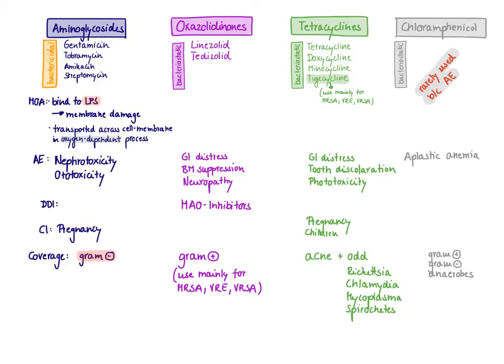It's important to remember that the oxazolidinones are MAO inhibitors, so you always need to watch out for drug-drug interactions with other drugs like SSRIs or MAOIs, and you should be worried about serotonin syndrome. The oxazolidinones only affect gram-positive bacteria because gram-negative bacteria have an efflux pump for which the oxazolidinones are substrates — they enter gram-negative bacteria but are pumped right back out, making gram-negatives intrinsically resistant. Because oxazolidinones are a newer drug class, we reserve them for drug-resistant bacteria like MRSA, VRE, and VRSA.